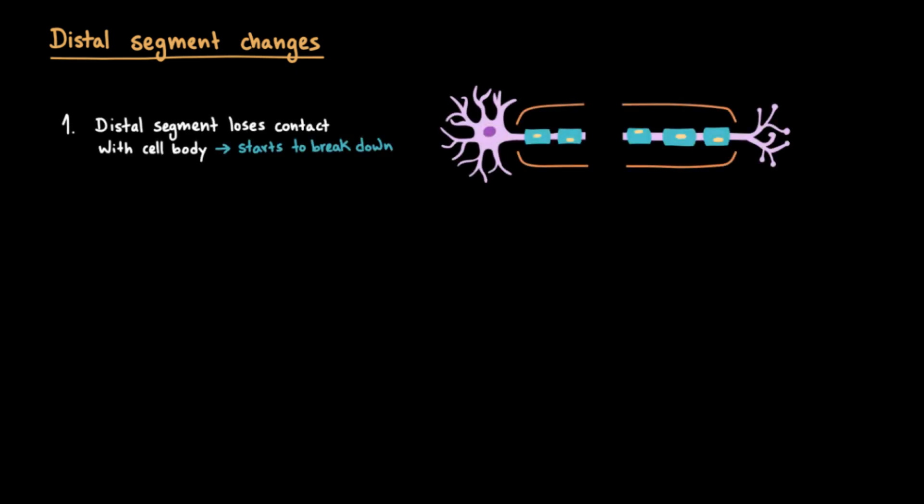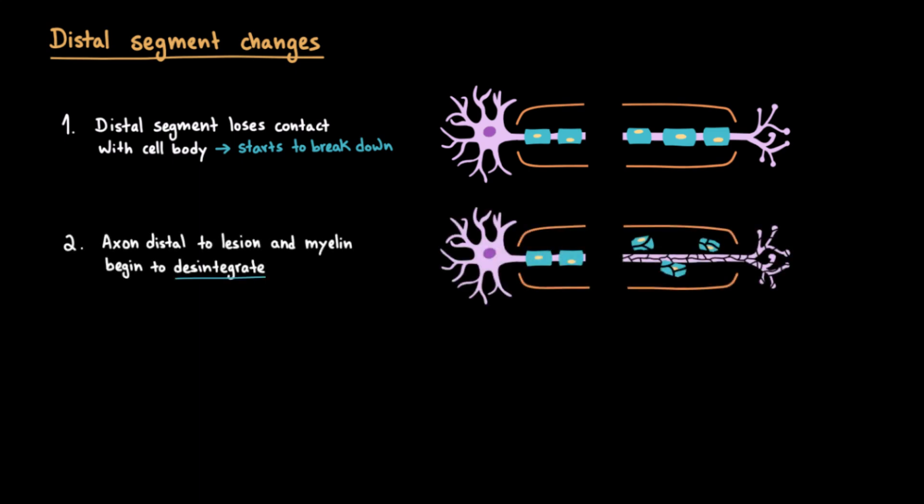In the distal segment, here's what happens step by step. Once the axon is cut, the distal portion loses all contact with the neuron's cell body. Without proteins and energy from the soma, it quickly begins to break down. Within 24 to 48 hours, the distal axon starts to fragment. This is axonal degeneration, and the myelin sheath around it also disintegrates.